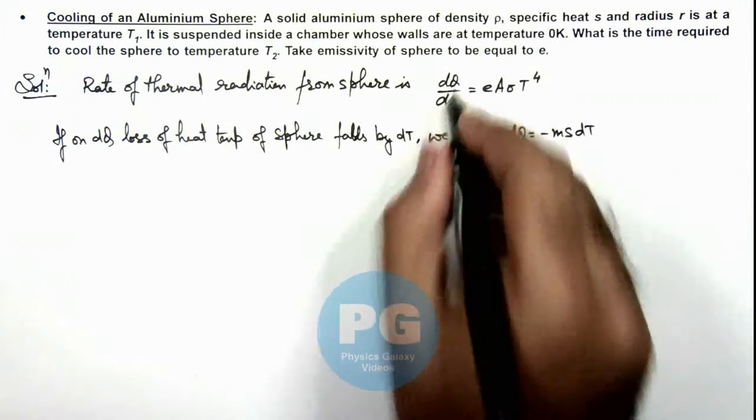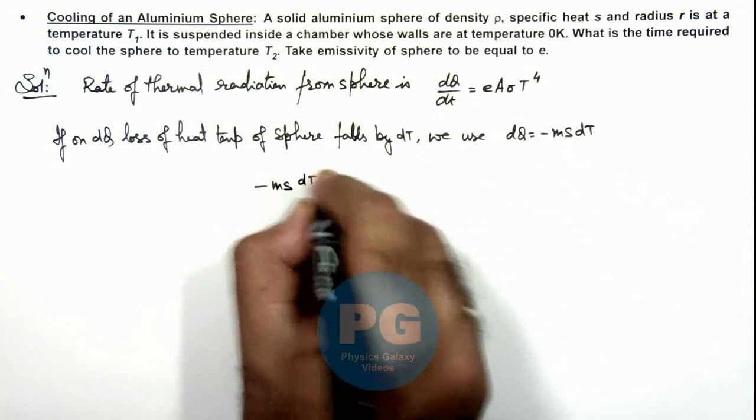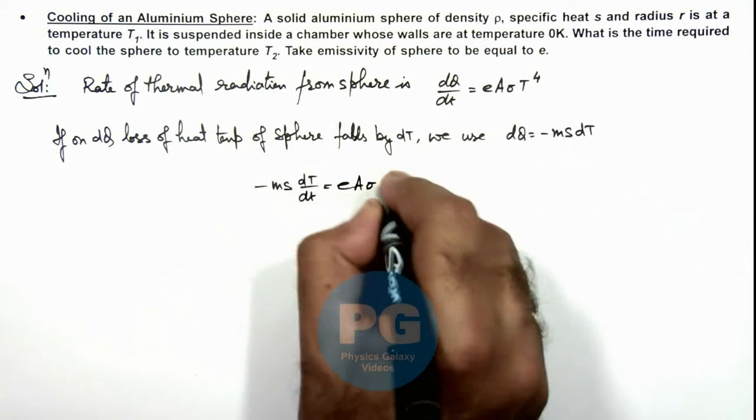On substituting the value, we can write minus ms dT/dt is equal to eAσT to power 4.